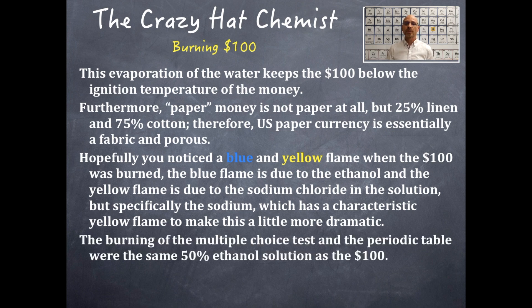The burning of the multiple choice test, the scantron, and the periodic table was in the same 50% ethanol solution as the $100 bill. And that's why you notice the characteristic colors of those as well. Being the little bit of blue and quite a bit of yellow. And paper is a little bit absorbent as well. And sometimes when this demonstration is done, some of the paper actually burns on the scantron on the edges or on the periodic table. But this time, it didn't.